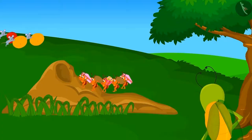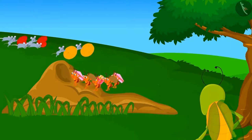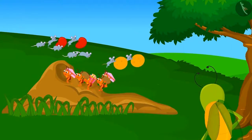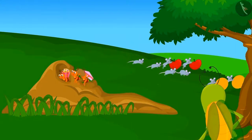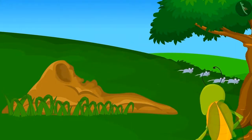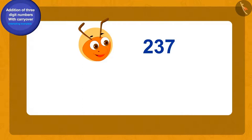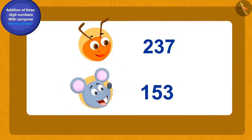Suddenly he saw a herd of ants and mice. The ants and mice were carrying pieces of some food items. There were 237 ants and 153 rats. Can you tell how many total animals were there in the herd?